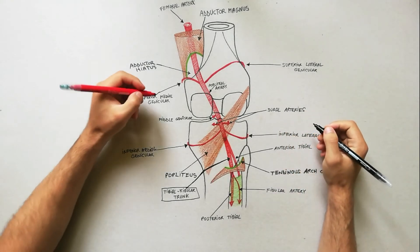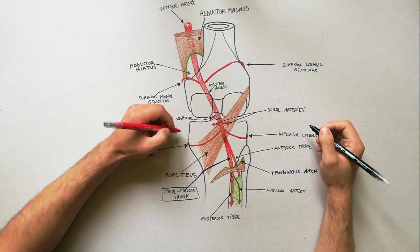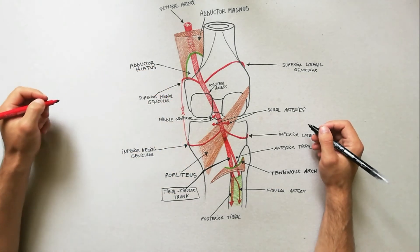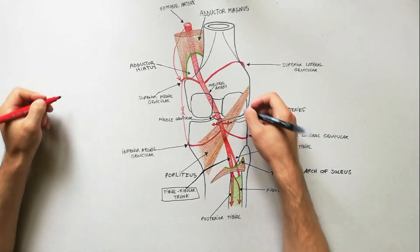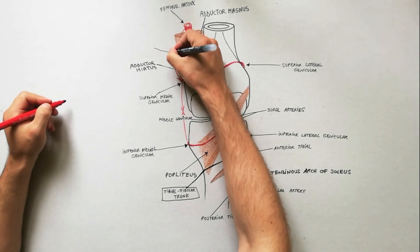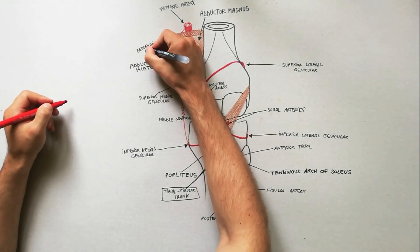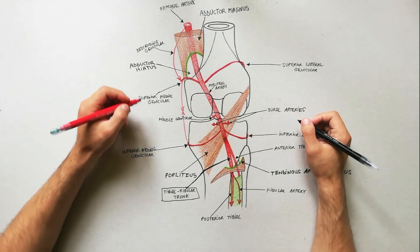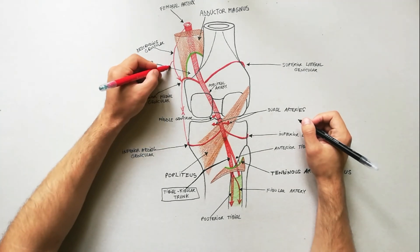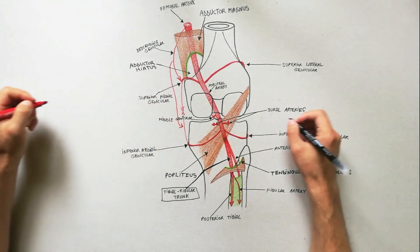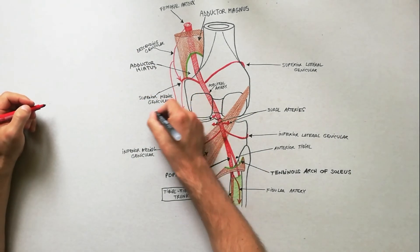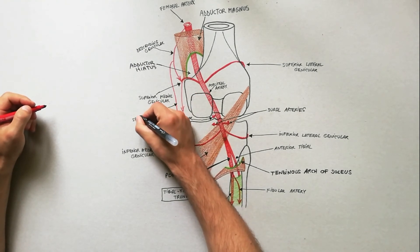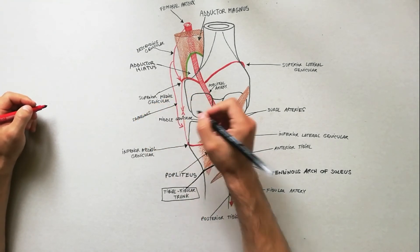The superior medial genicular artery anastomoses with the inferior medial genicular artery and the descending genicular branch of the femoral artery. The inferior medial genicular artery anastomoses with the superior medial genicular artery and the saphenous artery, which is a branch of the descending genicular artery.